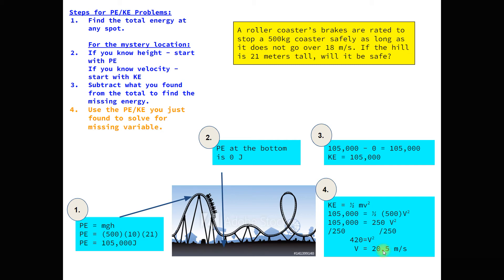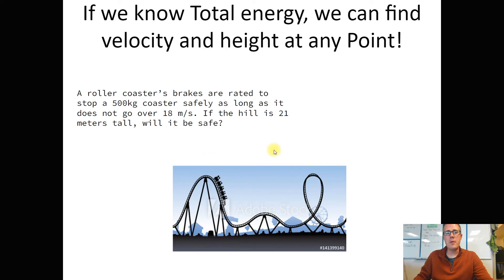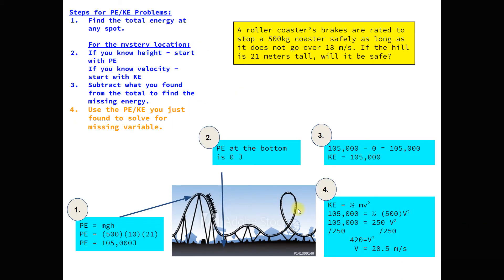So this roller coaster is going to be going 20.5 meters per second at the bottom of the hill. They said it cannot go over 18 meters per second to be safe — that means this roller coaster is going much too fast, over the limit. So it's not a safe roller coaster.